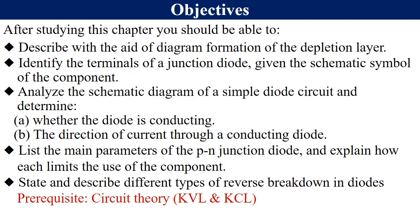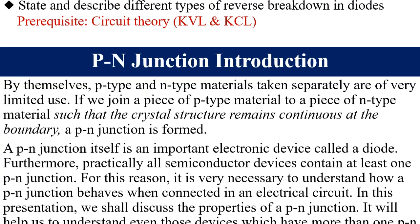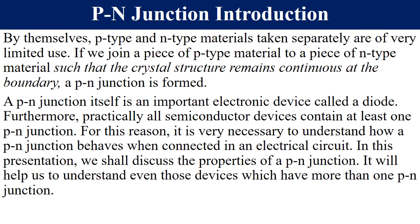We've got a prerequisite — it is assumed that you have done your circuit theory, in particular Kirchhoff's Voltage Law and Kirchhoff's Current Law. PN junction diode: P-type and N-type materials on their own are not very important in electronics. But if we join a P-type material to an N-type material, we form a very important basic electronic device having one junction.